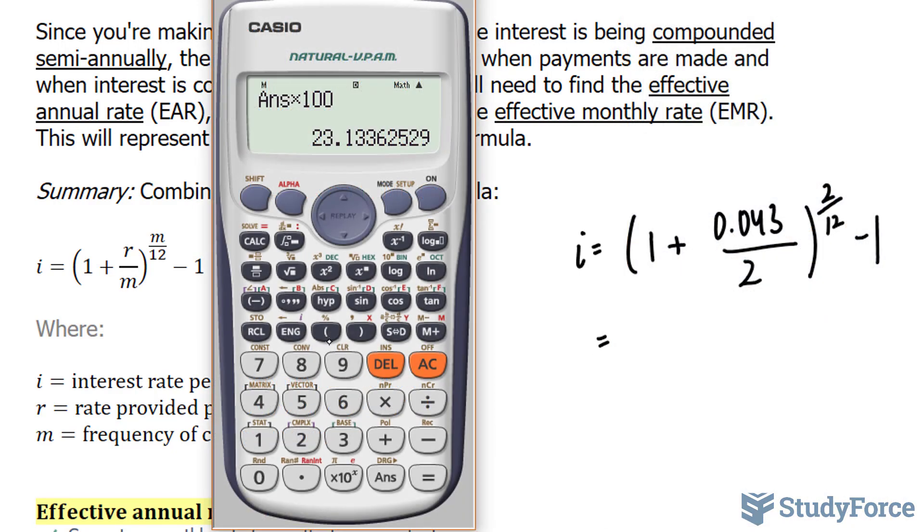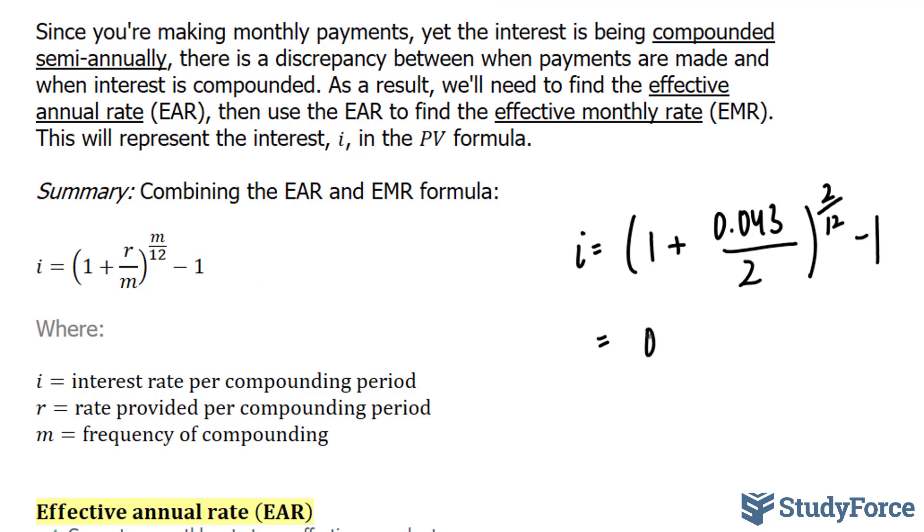Using our calculator, bracket, 1 plus 0.043 divided by 2 to the power of 1 over 6—1 over 6 because 2 over 12 reduces to 1 over 6—minus 1. And that gives us 0.0035516.